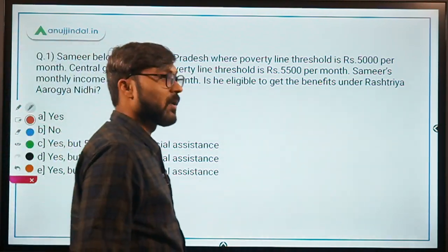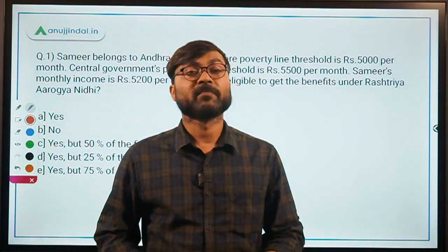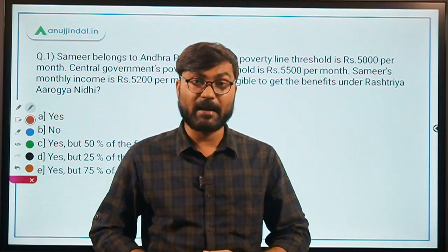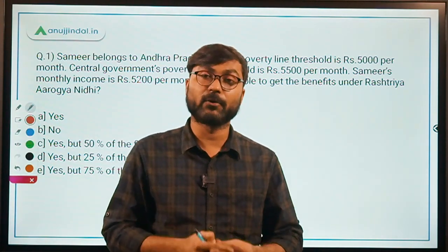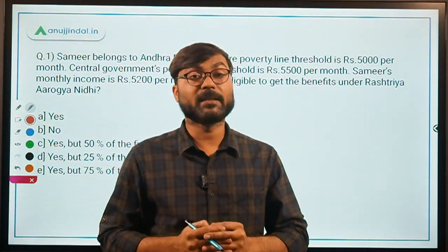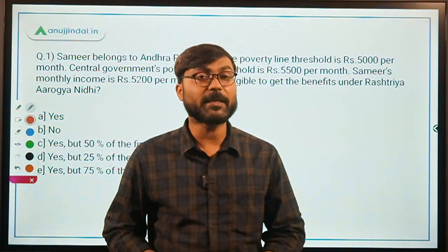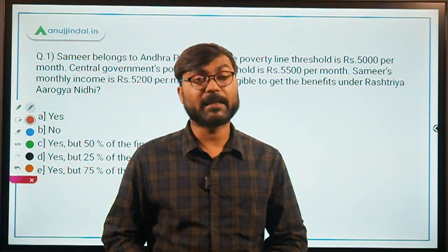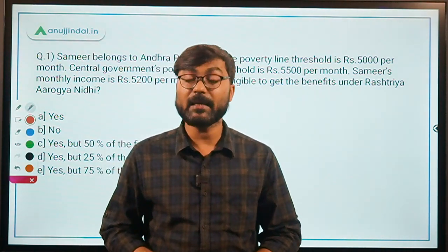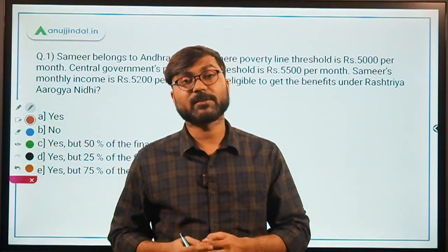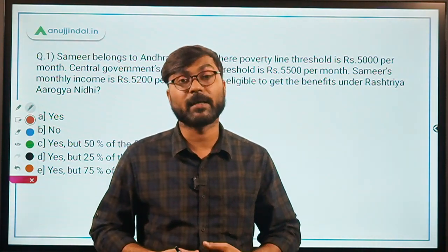To summarize Rashtriya Aarogya Nidhi: it provides financial assistance for major life-threatening diseases to BPL families, excluding government servants and Ayushman Bharat beneficiaries. It was launched in 1997 and has three components — RAN itself, the Cancer Patient Fund, and the Rare Diseases Fund. Revolving funds are Rs. 1 crore per component for all empanelled hospitals, and Rs. 2 crore for the RAN component at AIIMS New Delhi.